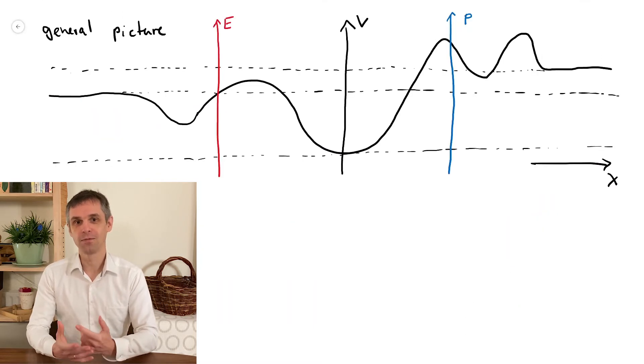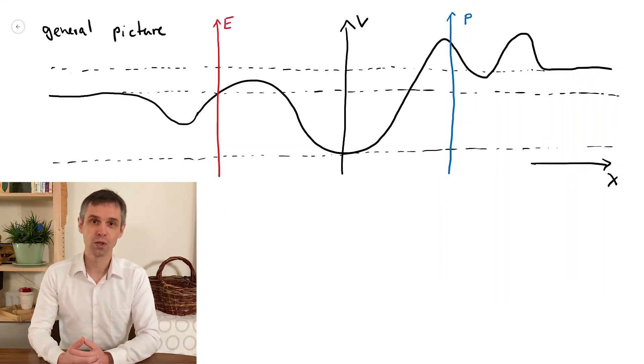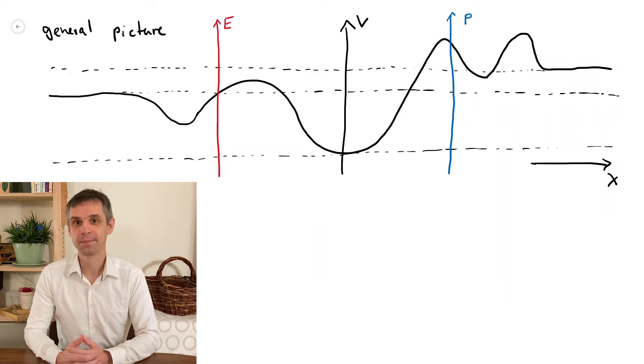We are guided by the following sketch of a relatively general potential. Here I indicate three important values, the global potential minimum and the asymptotic values of the potential to the very left and to the very right.